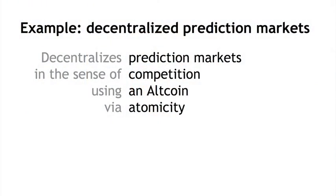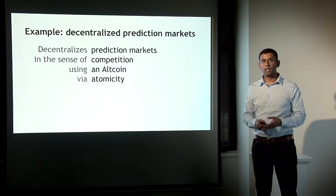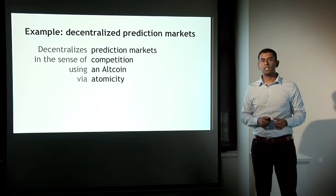Another example is prediction markets. It decentralizes a centralized prediction market like Intrade, and does so in the sense of competition — it doesn't get rid of the need for some entity to run a prediction market, but allows anybody to do that, lowering the barrier to entry. It was done using an altcoin, and the security property was atomicity: the two parties to a trade of a share in a prediction market are coupled together atomically, tying together the transfer of the share with the transfer of payment.